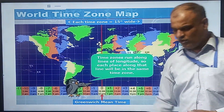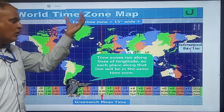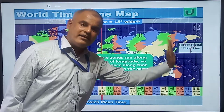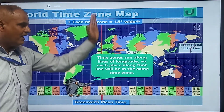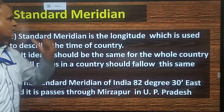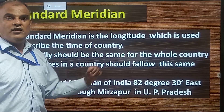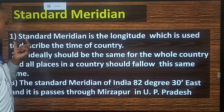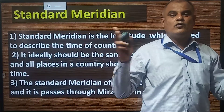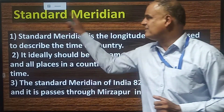This is the world time zone map. The Prime Meridian, which is called zero degree longitude, divides the whole world into 24 time zones. The standard meridian is the longitude used to describe the official time of a country — the time that is the same throughout a country.